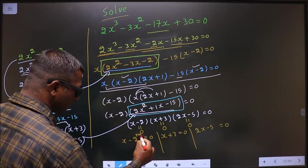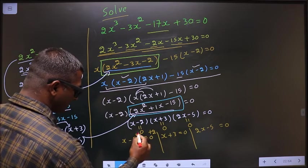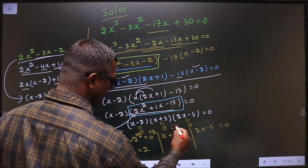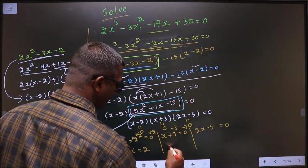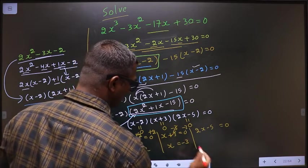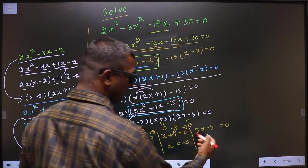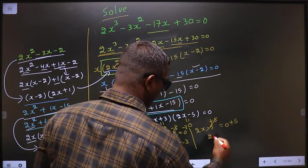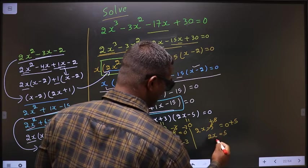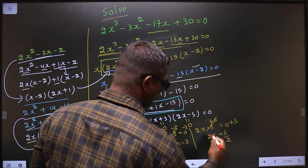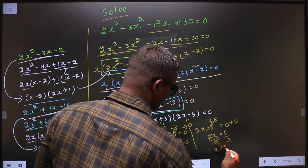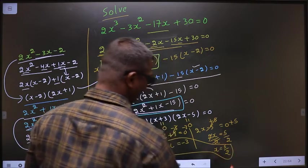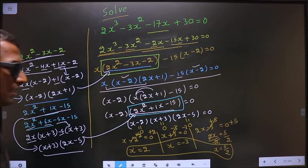To get x, add 2 on both sides — so here we get x is 2. To get x here, subtract 3 on both sides — so I get x is minus 3. Here, to get x first, add 5 on both sides, so we get 2x equal to 5. Now to get x, divide by 2 on both sides — so x equal to 5 by 2. So this is our answer.